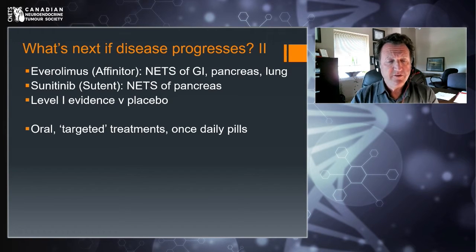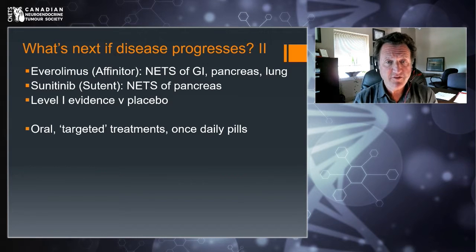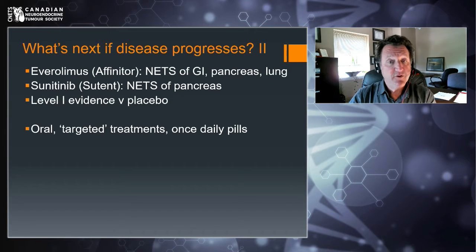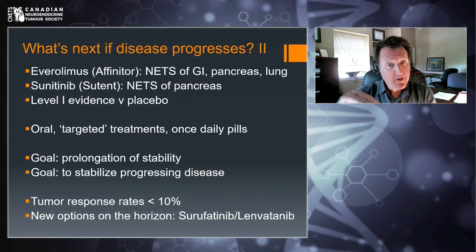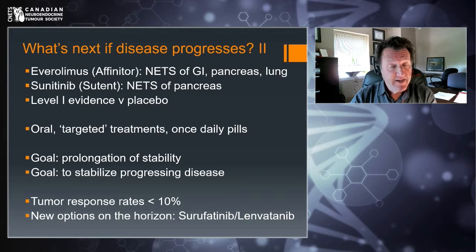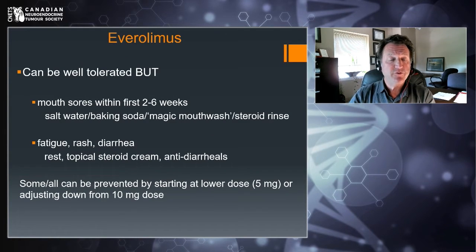The next type of treatments involve pill forms. Many of you are familiar with these medicines: one's called Everolimus or Afinitor, the other Sunitinib or Sutent. These are what we call targeted treatments — once-daily pills — with the same goals of prolonged disease stability or stabilizing disease that is progressing. Tumor shrinkage rates are again quite low, less than 10%. I'm going to focus on these two as the ones most commonly used.